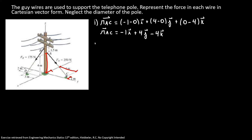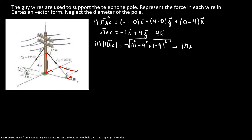Our second step is to find the magnitude of the position vector AC. So I have the square root of minus 1 squared plus 4 squared plus minus 4 squared. So the magnitude of vector RAC is equal to 5.74.